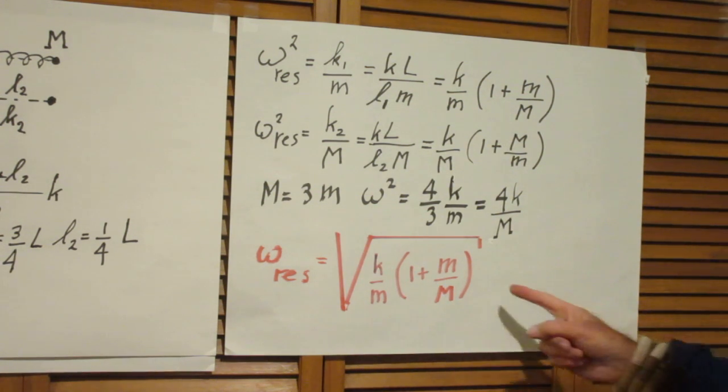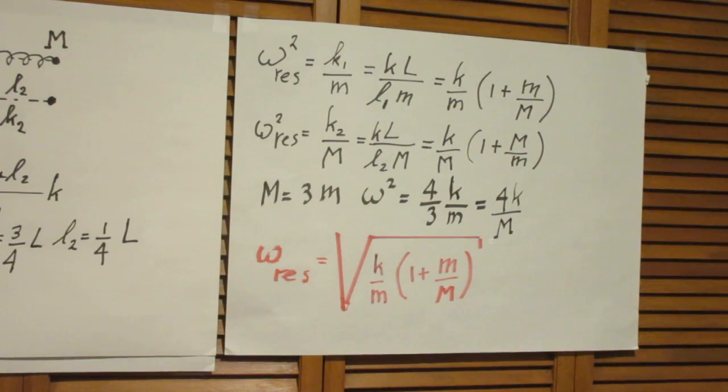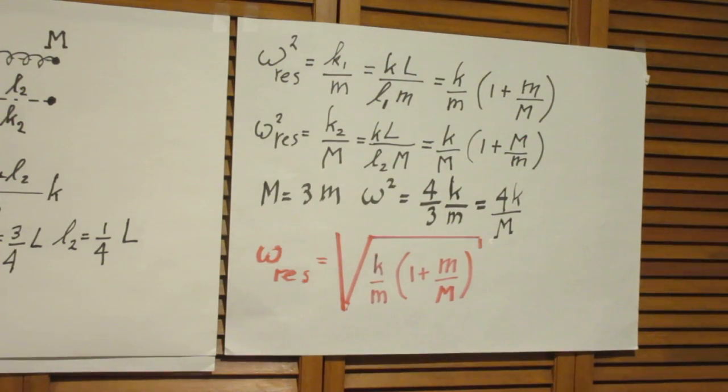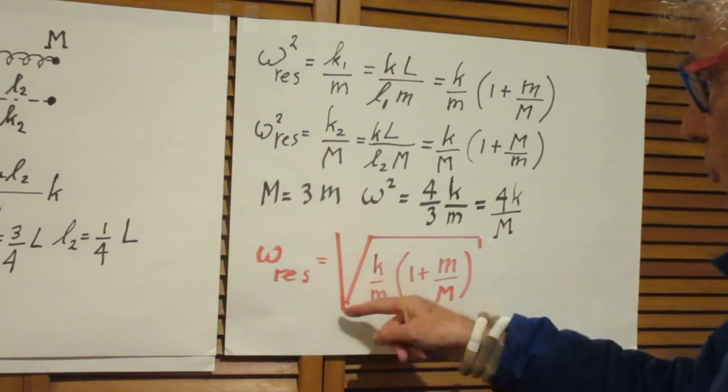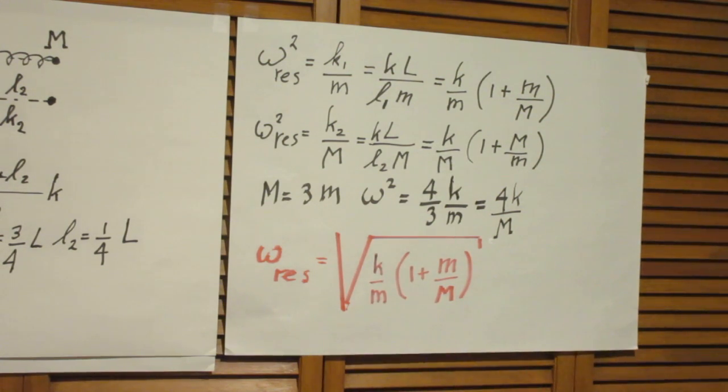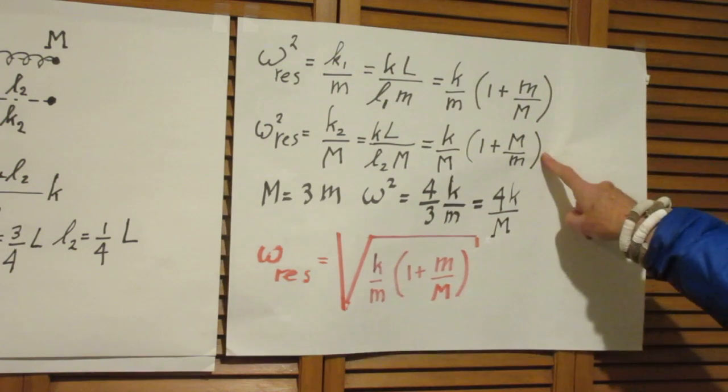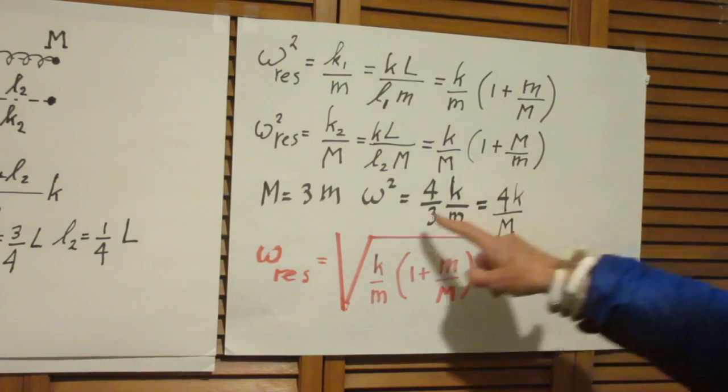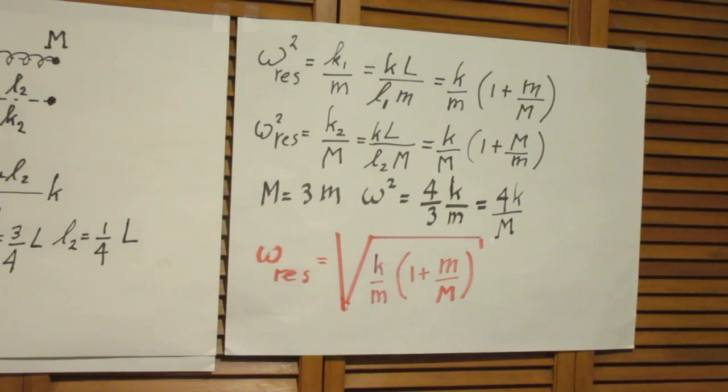So, the answer then that I would expect from you, if we take the square root, that the resonance frequency is the square root. You can take this one or you can take this one. I choose this one, and that will give you then this result.